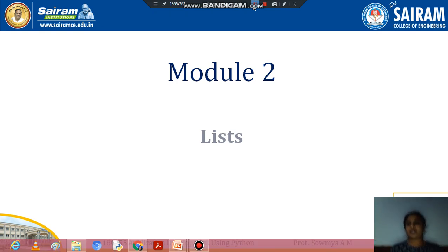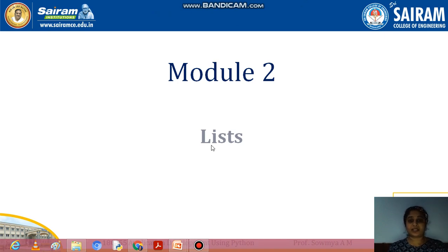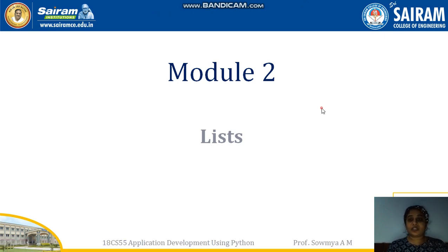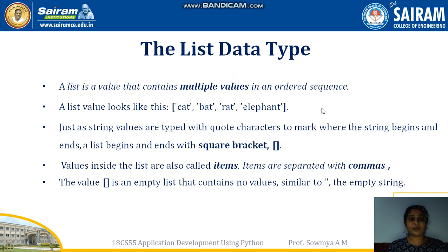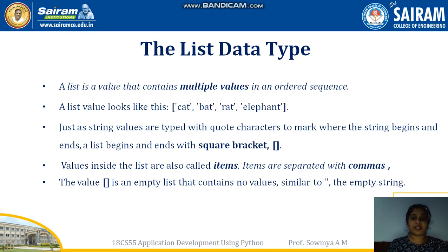Good morning everyone. We will be starting the second module from this video. The first topic in the second module is list. A list is a data type where multiple values are stored in an ordered sequence. A list always starts with an open square brace and ends with a closed square brace, and multiple data items are stored one after the other separated by commas.